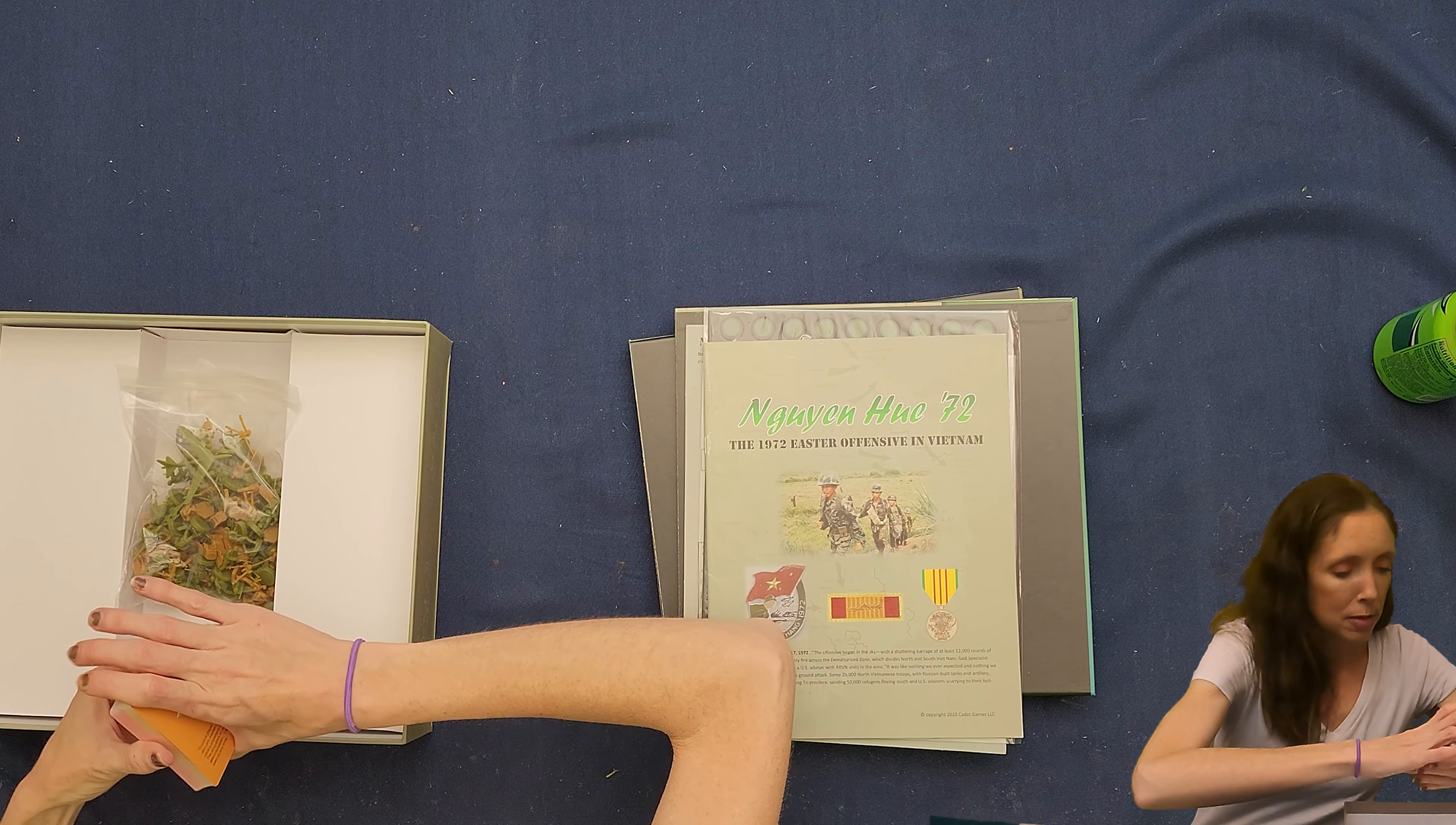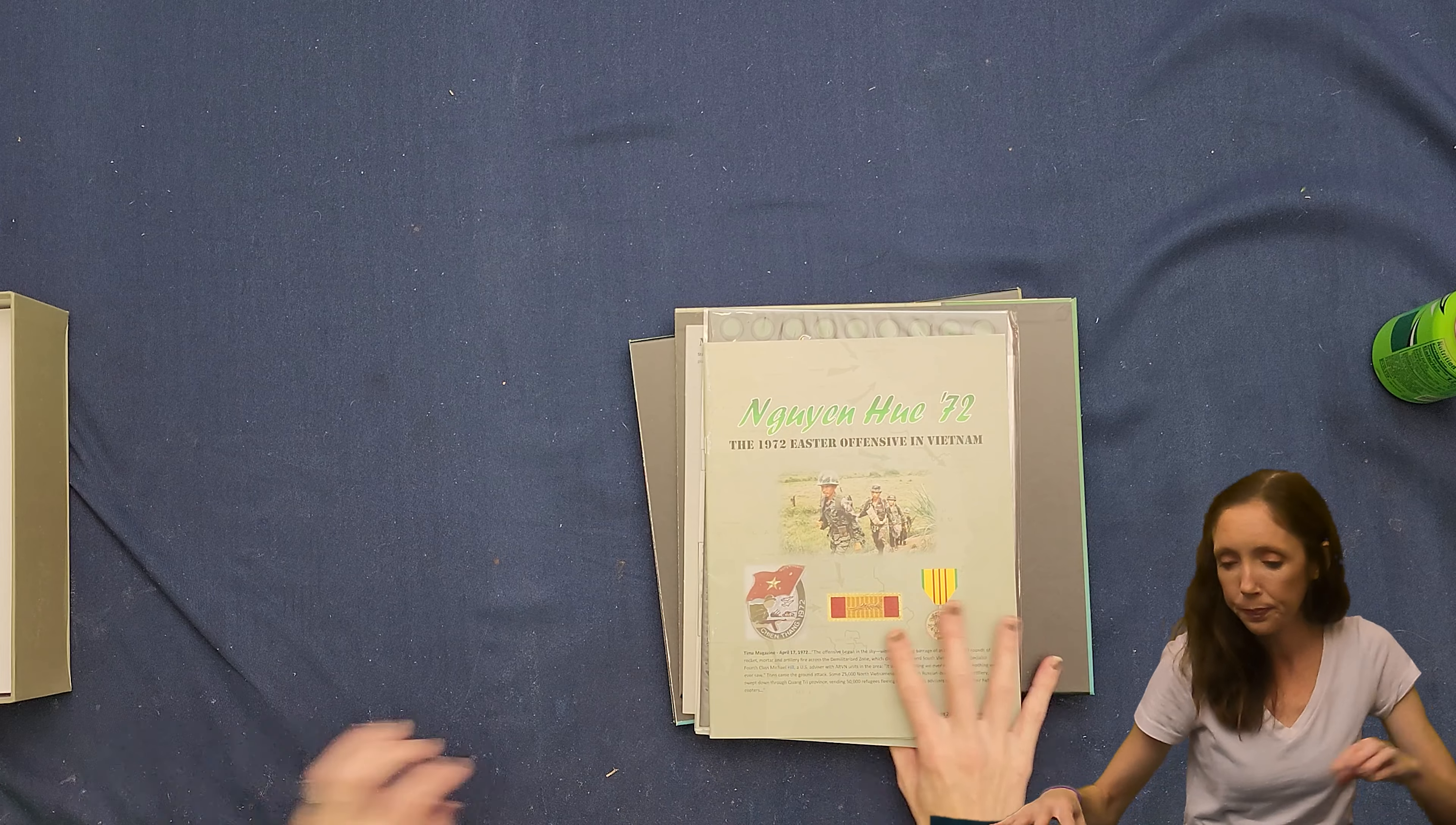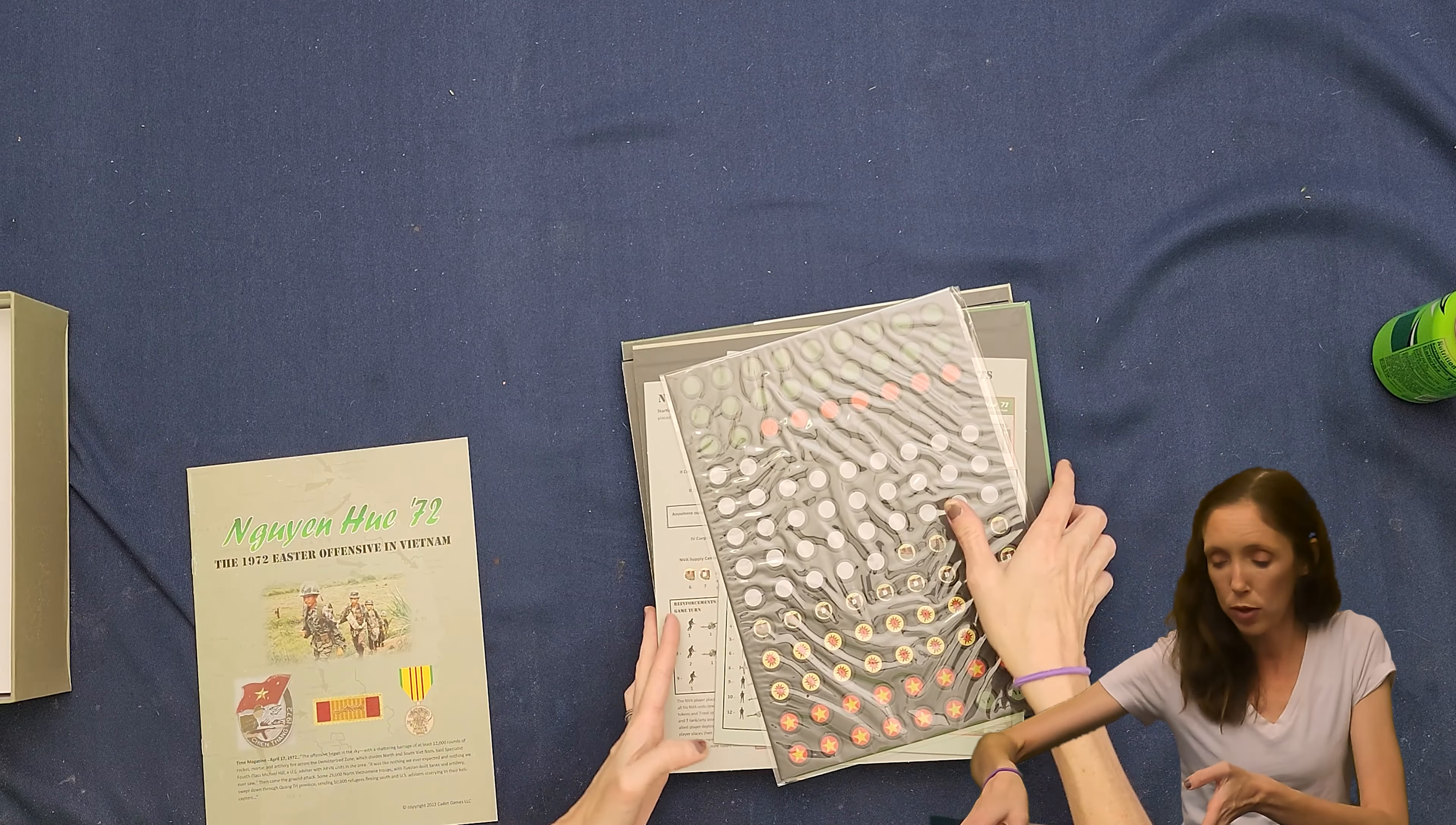So there are those, I'm going to stick these back in the box so we don't get them lost or messed up or anything. And then it looks like a rule book, some counters, looks like a couple of player aids, and then the rest is game boards.